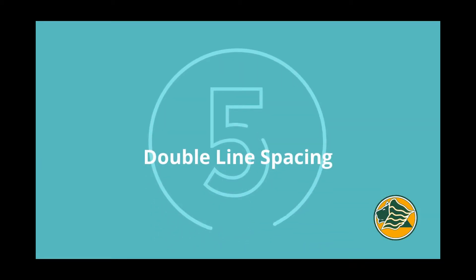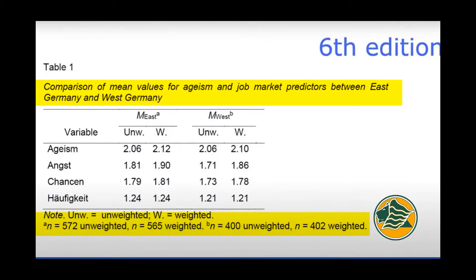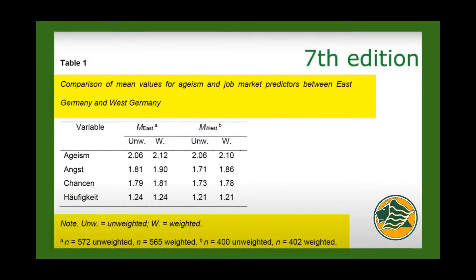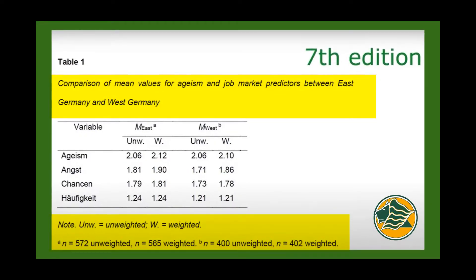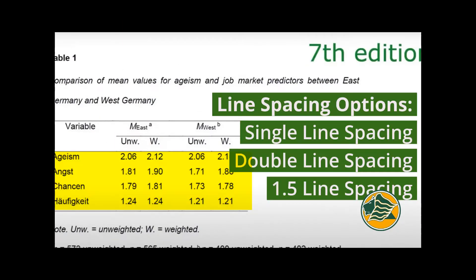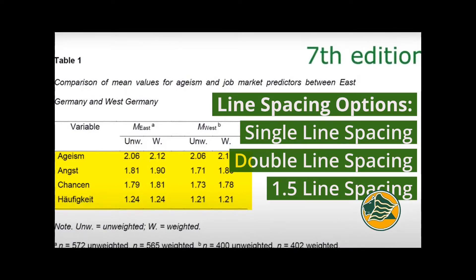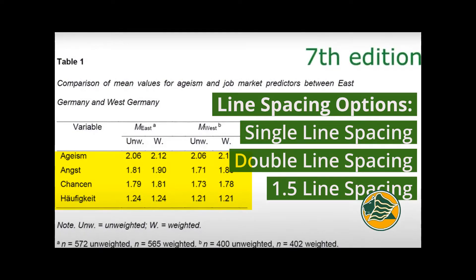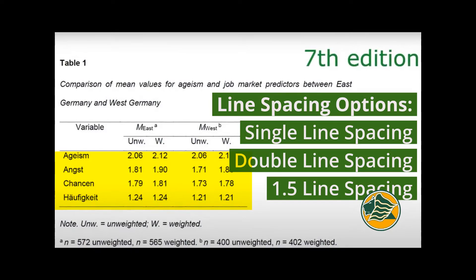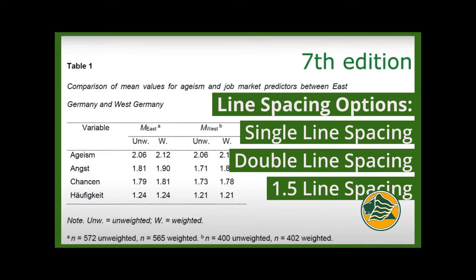The fifth change is double line spacing. In APA 6, the table title and the notes generally have very little spacing between them. In APA 7, there are now explicit rules on having double line spacing for the notes at the top and the notes at the bottom of the table. For the content of the table, you have three choices. You can use single line spacing, double line spacing, or 1.5 line spacing. It's nice to have choices.